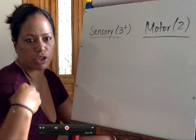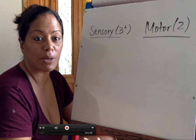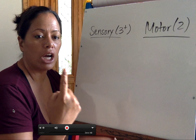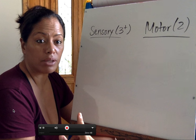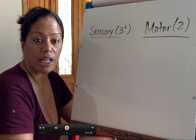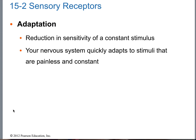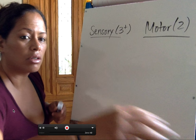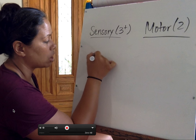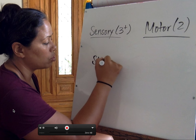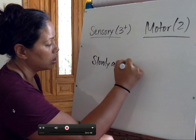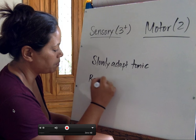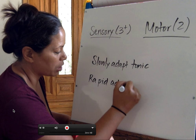Adaptation is the ability to acclimate to a certain environment. When you put on your shirt in the morning, you feel it at first, but over time you don't feel it anymore — you've adapted to the sensation. Your tolerance to it goes up and your sensitivity goes down. Tonic receptors adapt slowly — they're called slowly adapting tonic receptors. And then there are rapid adapting phasic receptors.